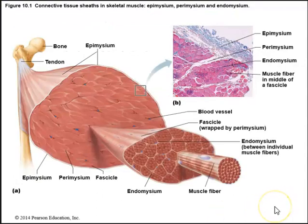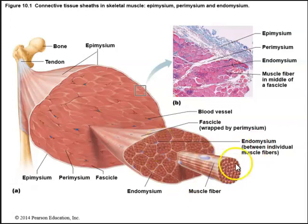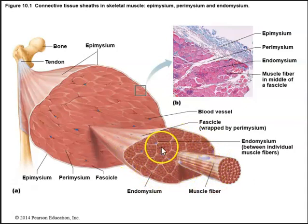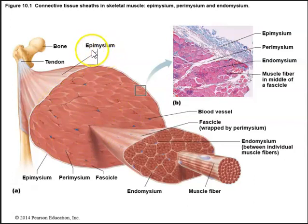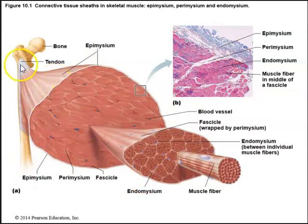Here we see a diagram of the gross anatomy of skeletal muscle along with its connective tissue sheaths. An individual muscle fiber is surrounded by endomysium. All these individual muscle fibers form a muscle fascicle, which is surrounded by perimysium. A bunch of fascicles form the actual skeletal muscle, and the covering for the entire muscle is the epimysium — the outermost layer. The epimysium and connective tissue sheaths are continuous with the tendon.